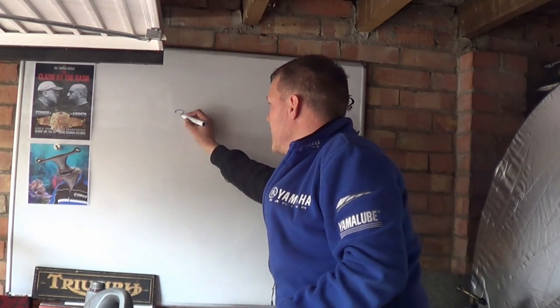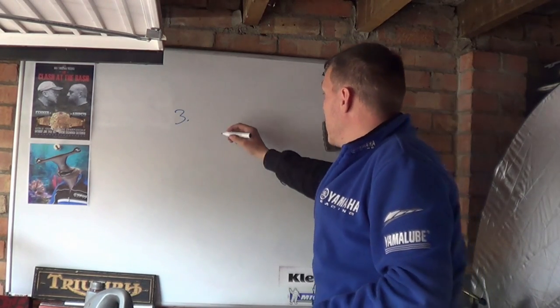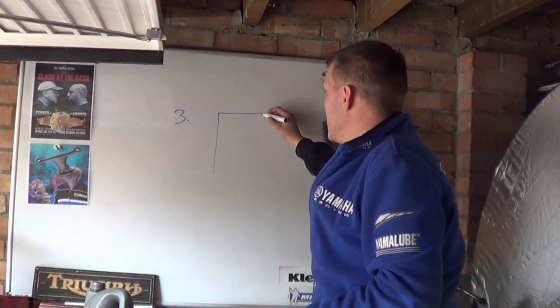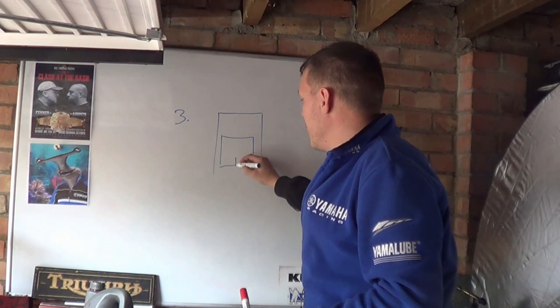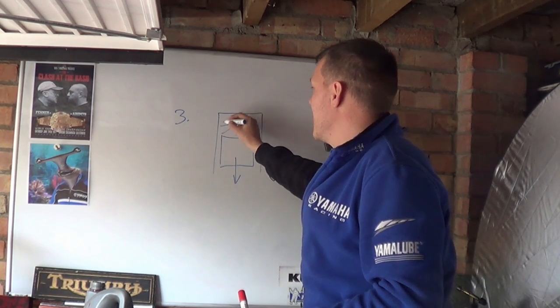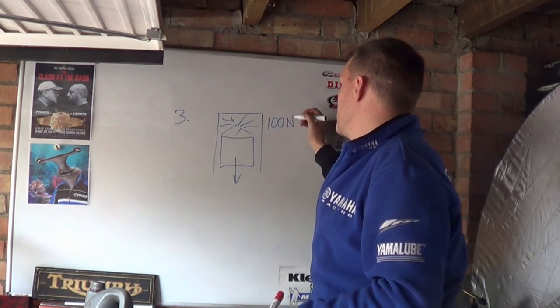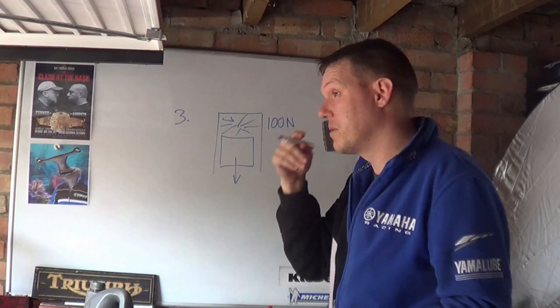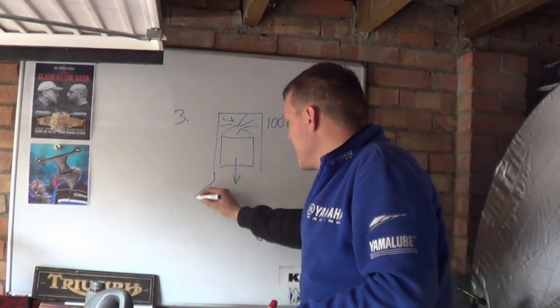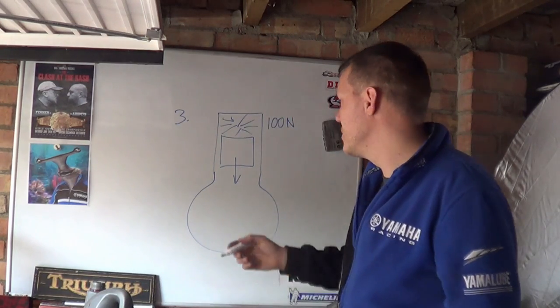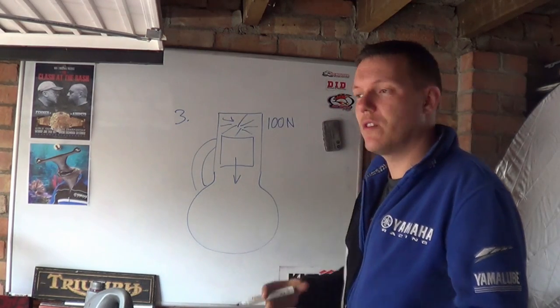Reason number three why two-strokes produce less torque is because of the pumping losses. In a two-stroke, when your piston starts to descend on the power stroke, there's all this expansion in here applying a force. Say we've got a hundred newtons of force that we can extract from this combustion event. Ignoring the exhaust port thing, you've got to remember that two-strokes are crankcase breathing engines.